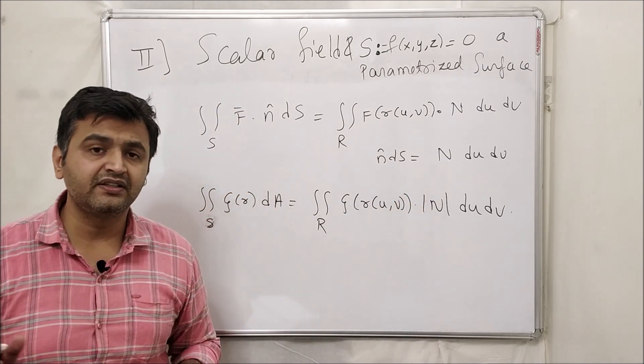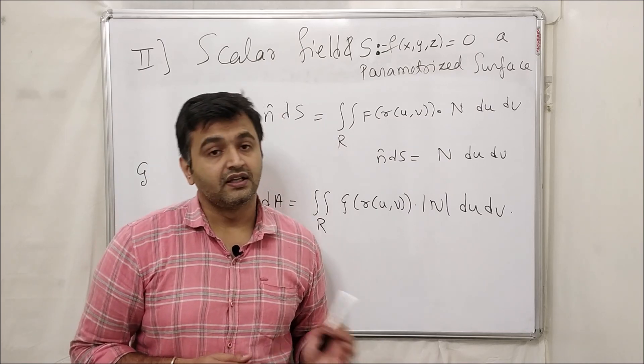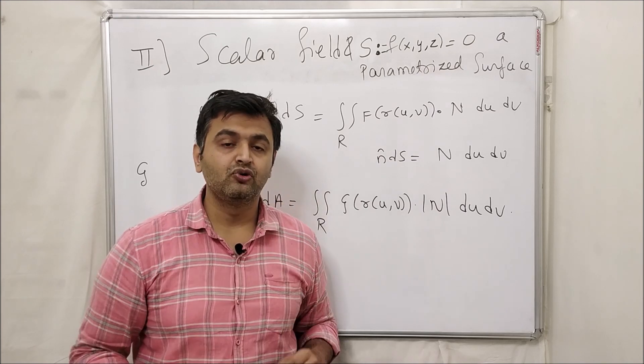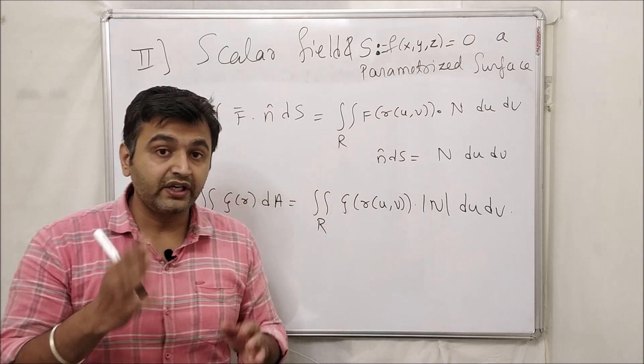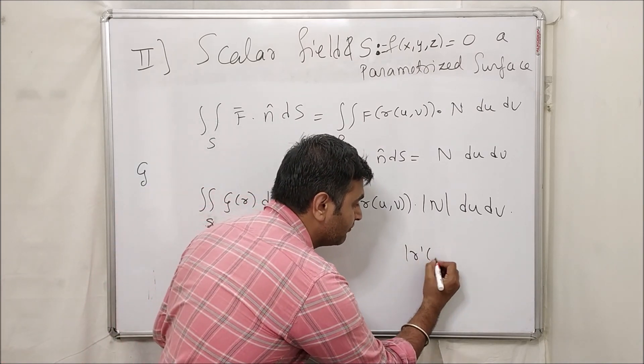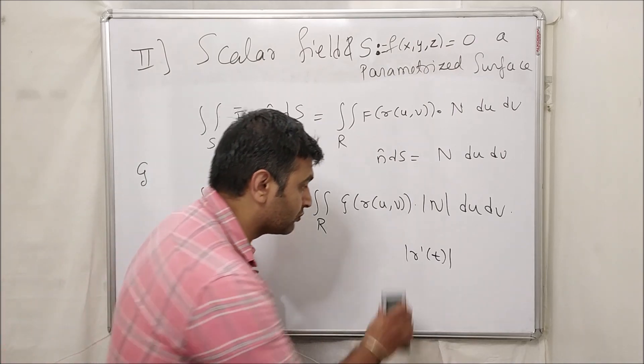This is kind of the same thing that you have seen in the line integral. When you have a scalar field, then how to tackle the line integral. If you are not sure about that, I will post the link in the description. You can see that as well. So there also you take mod of R prime of t. If you recall in line integral you take mod of R prime of t. So here you take mod of the normal vector.